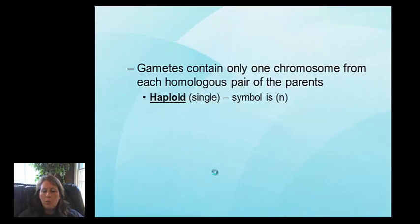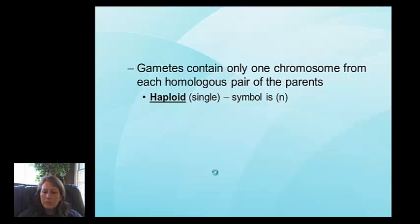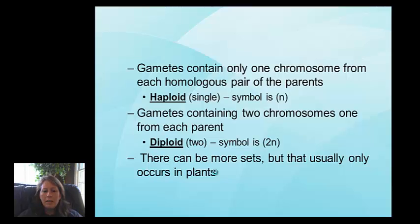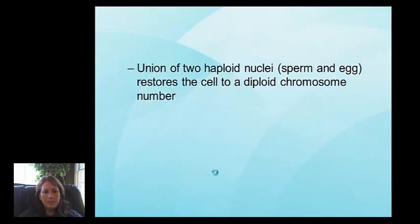Gametes contain one chromosome from each homologous pair of the parent — that is haploid, represented by lowercase n. Diploid is represented by 2n. Some plants can have more sets, but we'll focus on haploid and diploid, especially for humans. When the two haploid nuclei — sperm and egg — unite, it restores the cell to the diploid chromosome number.